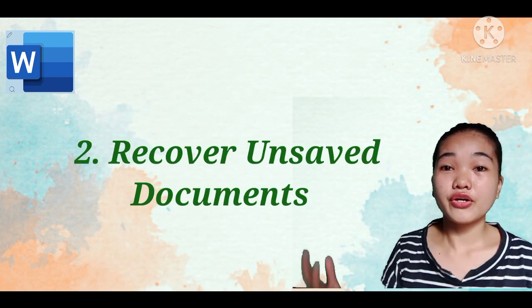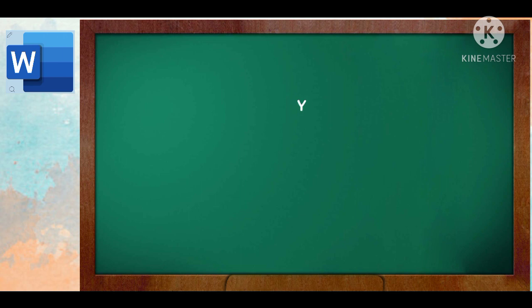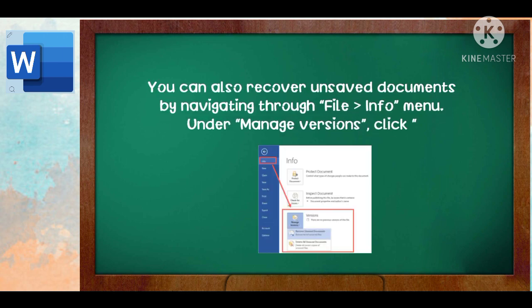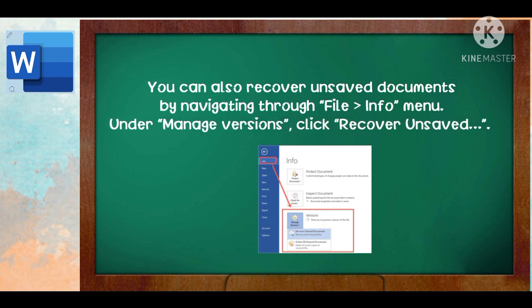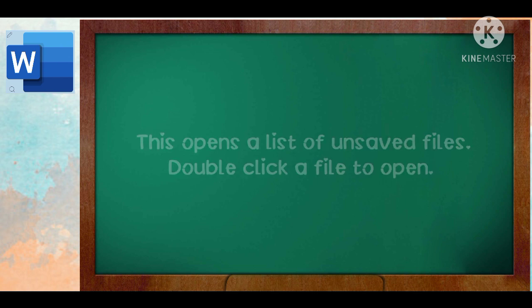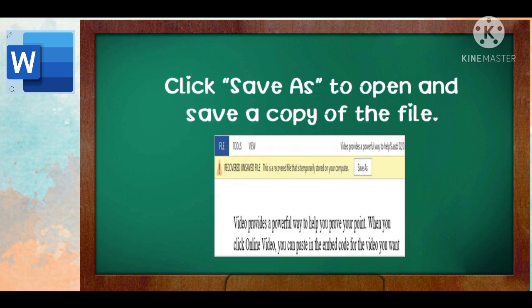Next, we have Recover and Save Documents. You can also recover unsaved documents by navigating through File, Info, Menu. Under Manage Version, click Recover and Save. This opens a list of unsaved files. Double-click a file to open. Click Save As to open and save a copy of the file.